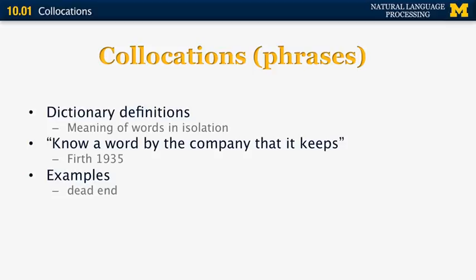In general, phrases have many different uses and categories. For example, a dead end is a street that doesn't have an exit — it's not somebody who has died. Another example is strong tea: even though the words strong and powerful are synonyms, we don't say powerful tea, but we always say strong tea. Those two words form a collocation that is different from the meaning of the individual words.